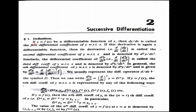Now, look at the definition of successive differentiation. If y = f(x) is a differentiable function of x, then dy/dx is called the first differential coefficient of y with respect to x. If this derivative is again a differentiable function, then its derivative — that is d/dx of dy/dx — is called the second differential coefficient of y with respect to x.